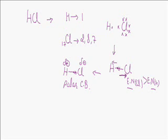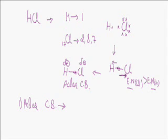Polar covalent bond means bonds in which partial charges are developed on the bonded atoms. Examples include HCl, HF, and HI — in all these, the bonded atoms differ in electronegativity, so they acquire positive or negative partial charges.